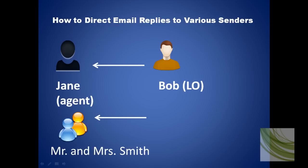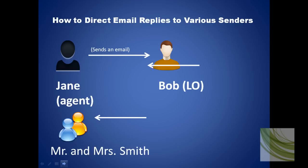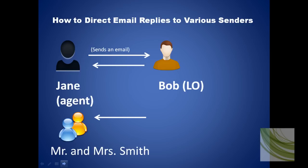In this example, we have a real estate agent, Jane, who has a question for loan officer Bob. She wants the answer to be received by her clients, Mr. and Mrs. Smith. So she sends an email to Bob and then Bob replies directly to her. But how does she get this to auto-send to her clients, Mr. and Mrs. Smith?